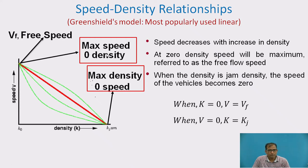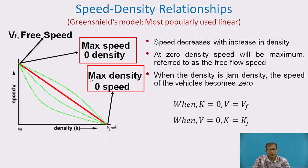At free speed (vf), density is 0 because at high or free speed the spacing between vehicles is very large. As density increases, speed decreases. When k = 0, v = vf (free mean speed). When v = 0, k = kj — the jam density — meaning all vehicles are in a congestion or standstill condition.